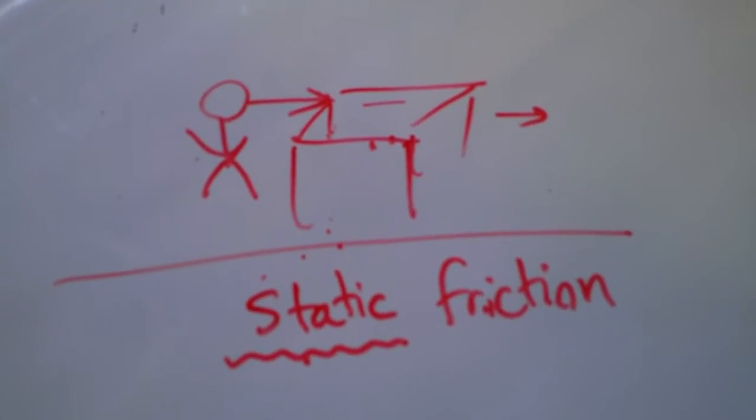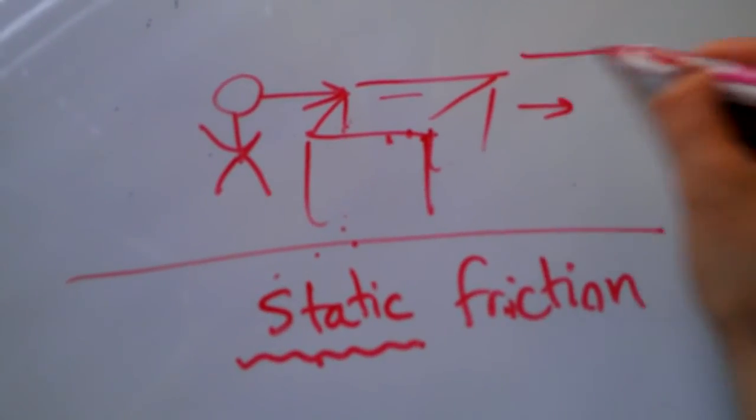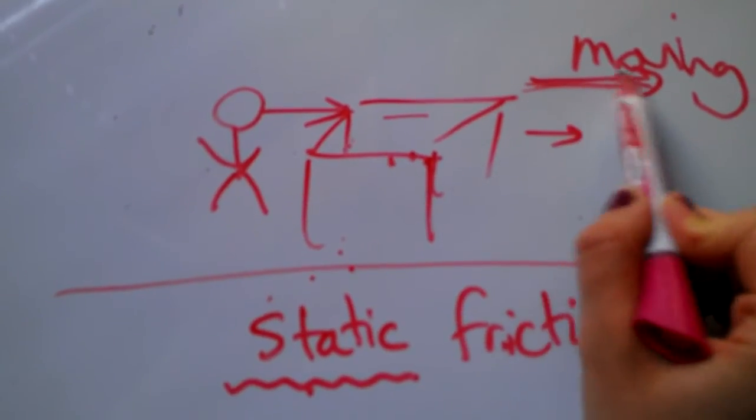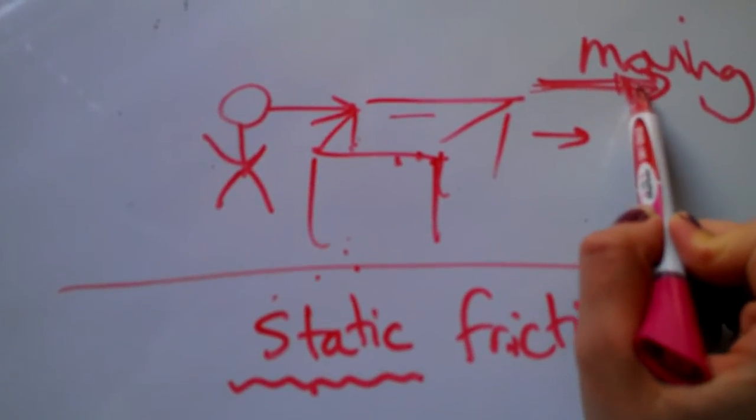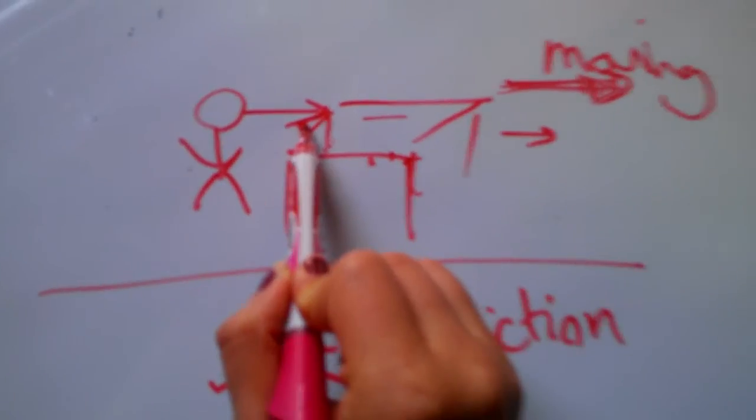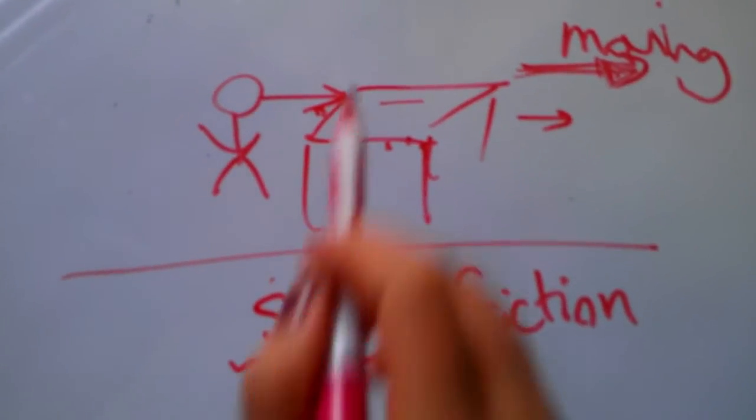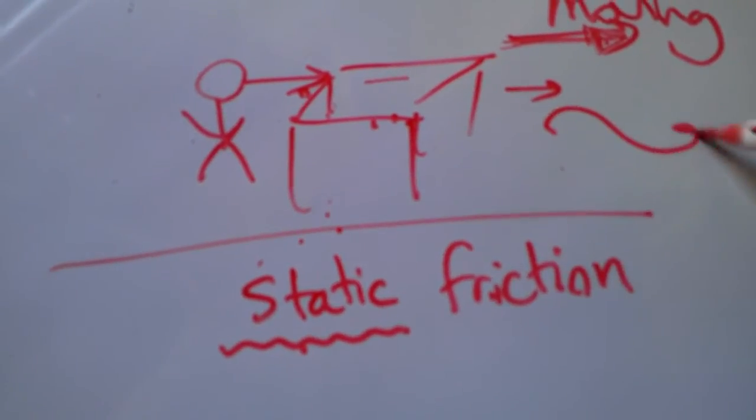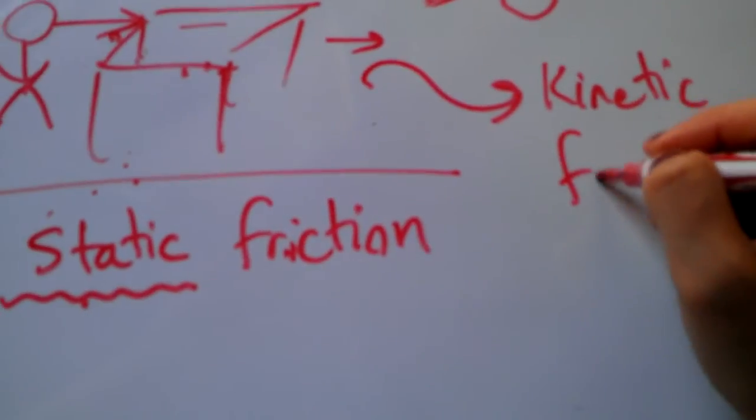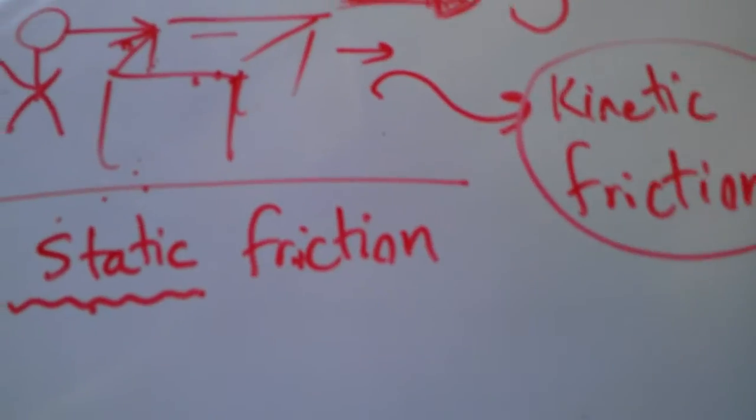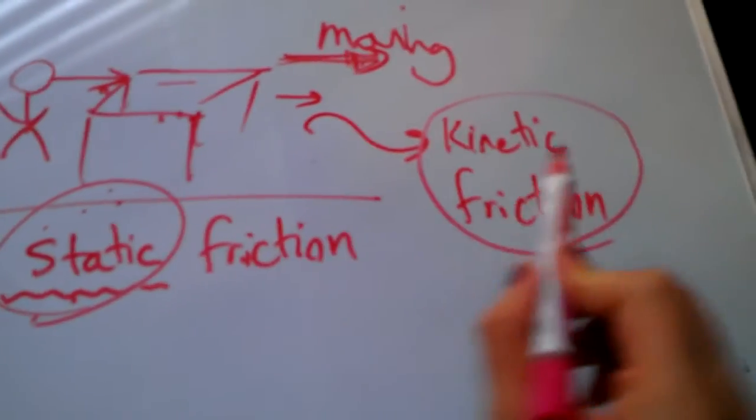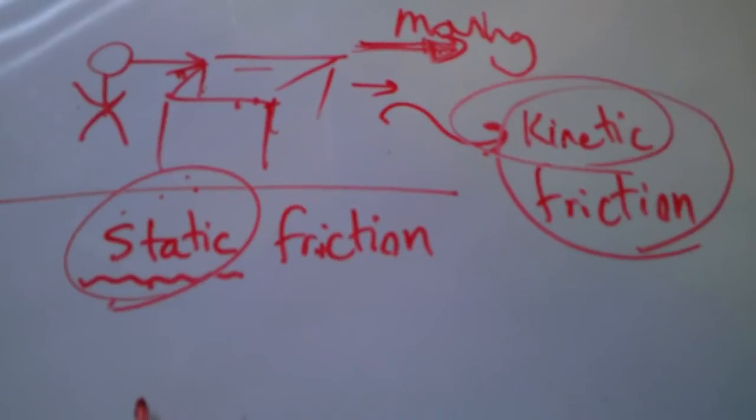Static means friction due to motionless objects. Now what if I push harder such that this actually starts moving? The velocity is this way. Moving, arrow for moving is the same arrow for velocity. The arrow for acceleration is the same arrow for force. Please remember that. If this starts moving, then I get into another sort of friction. I call this kinetic friction.